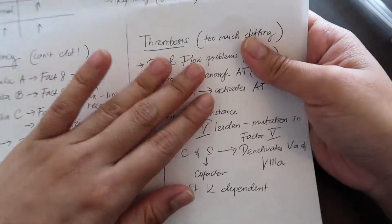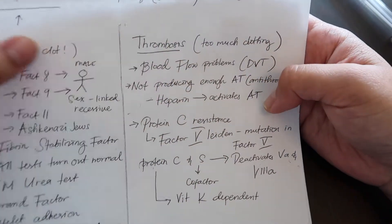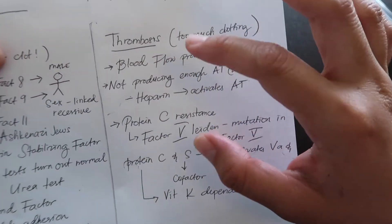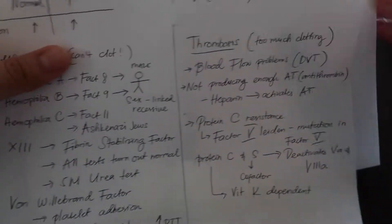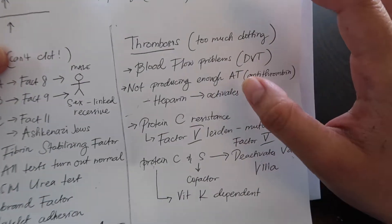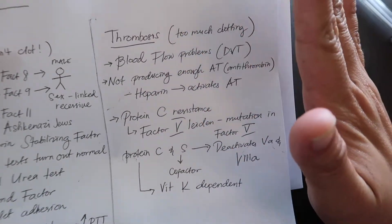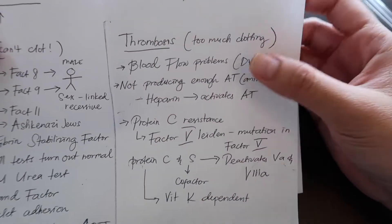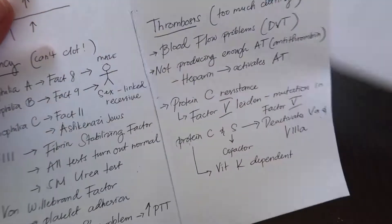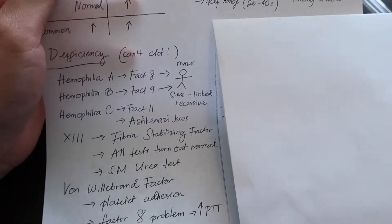And thrombosis, which is you're producing too much clotting. You have an okay amount of factors but you couldn't stop it from happening. We're going to start on the deficiency side first.